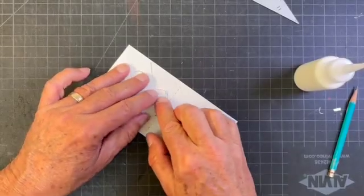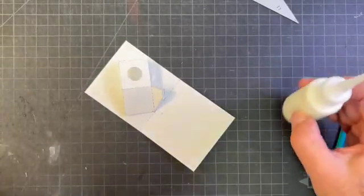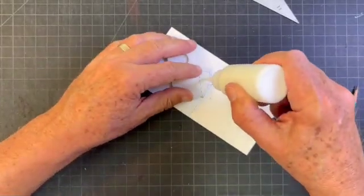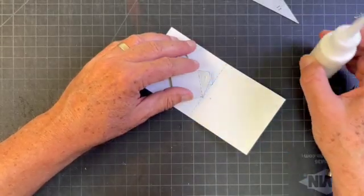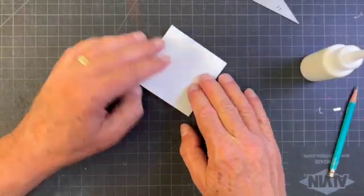And now as usual, we're going to glue this together with the pop-up flat. A little bit of glue there. Fold it over.